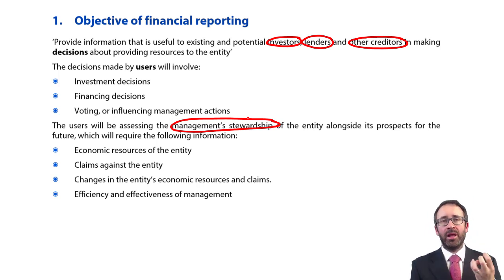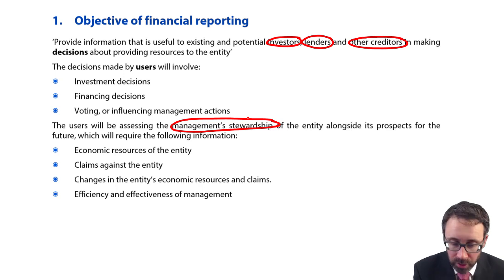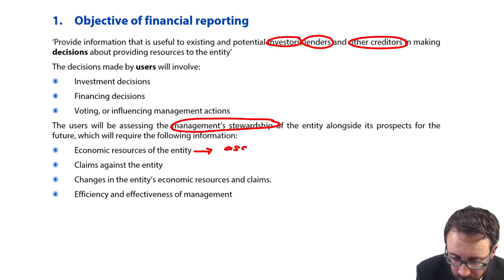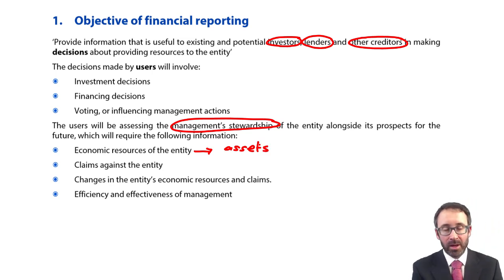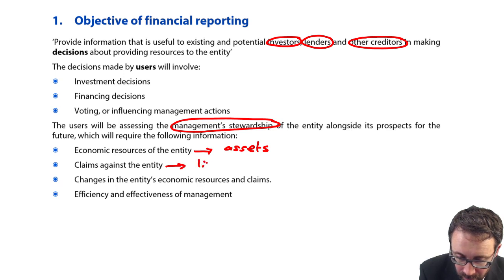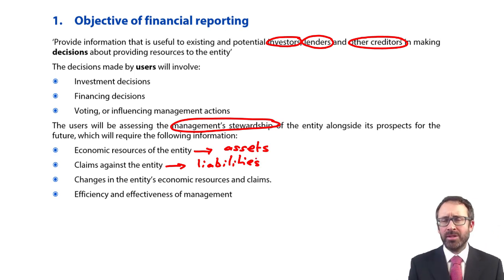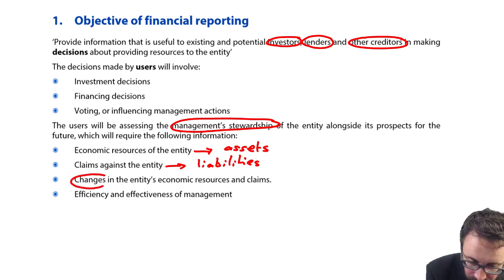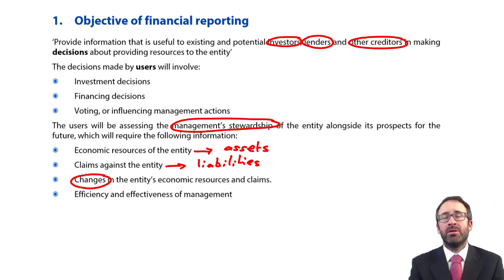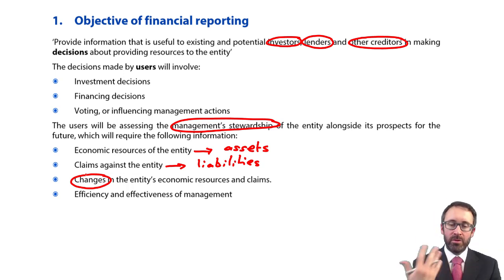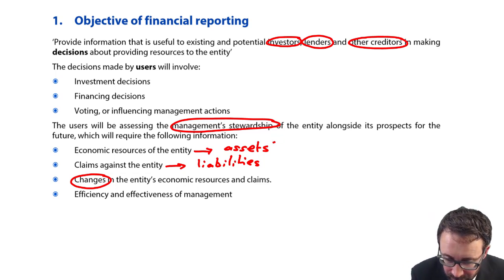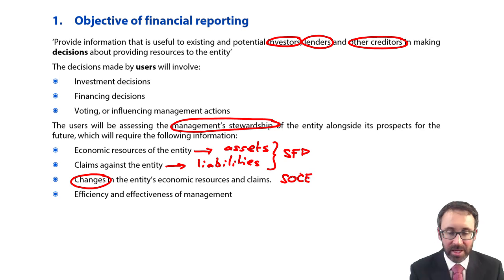The framework puts it a little more subtly. It starts talking about the economic resources of the entity — basically looking at your assets — and the claims against the entity, so your liabilities and technically your equity as well, because that's the claim the shareholder has. Then there are the changes in the entity's economic resources and claims. Where do we see the word 'change' in a financial statement title? The statement of changes in equity. So the resources and claims are covered in the SFP, and the changes are within the statement of changes in equity.